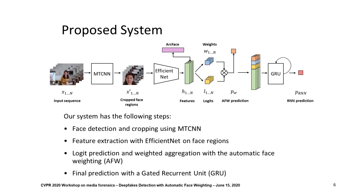This is our proposed method. Our system has the following steps. First, we detect faces using MTCNN. Then, we crop the regions where faces have been detected and we extract features using EfficientNet. The extracted features are used to predict logits and weights that are combined in the layer that we name Automatic Face Weighting. Finally, a gated recurrent unit is used to obtain the final prediction.